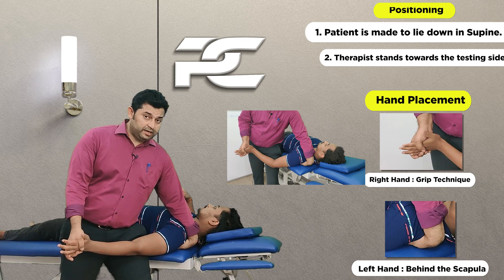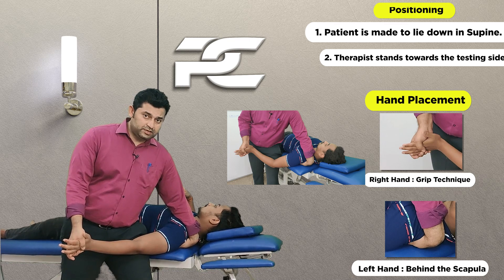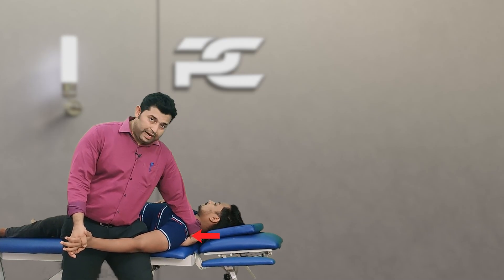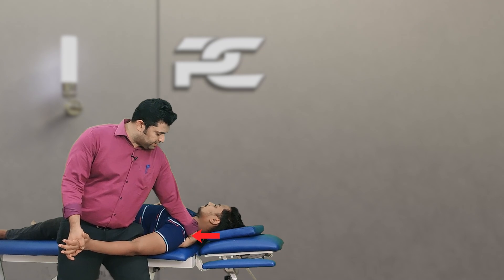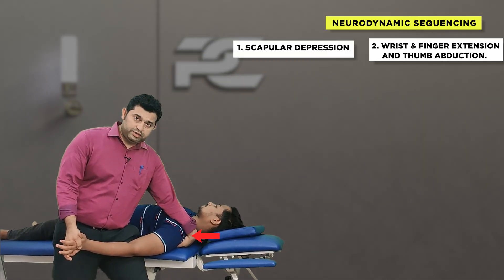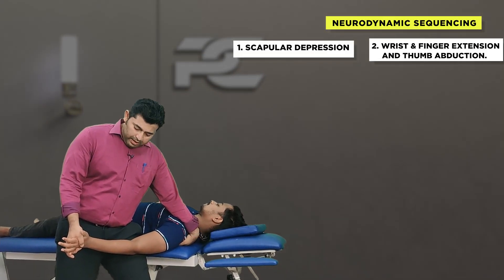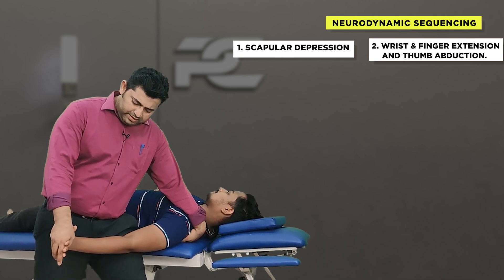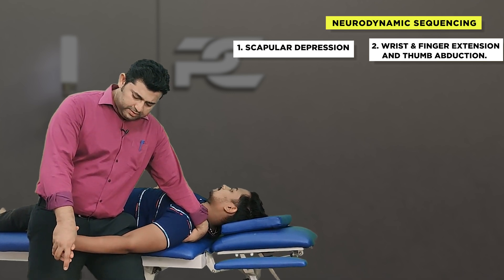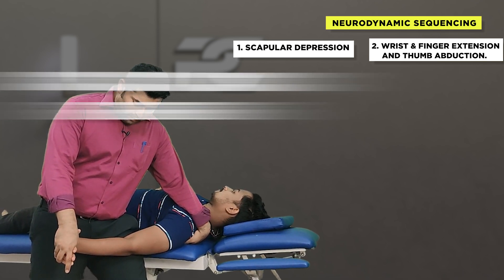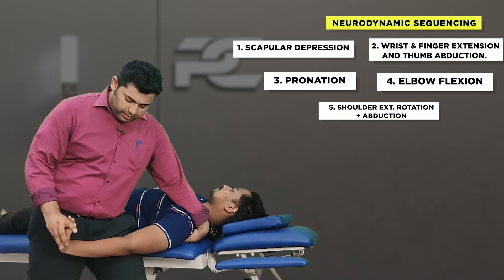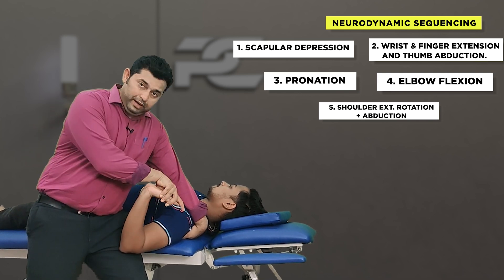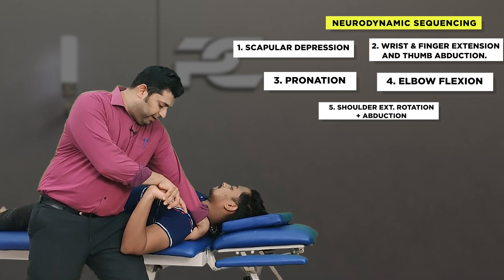The sequence of standard testing is as follows. The first important component added is the scapular or shoulder depression movement. From here, the therapist extends the wrist and fingers of the patient, the forearm is fully pronated, and the elbow is bent while supporting the patient's arm with the thigh.